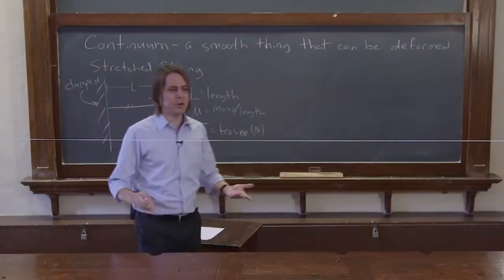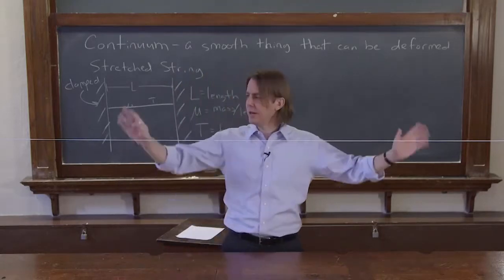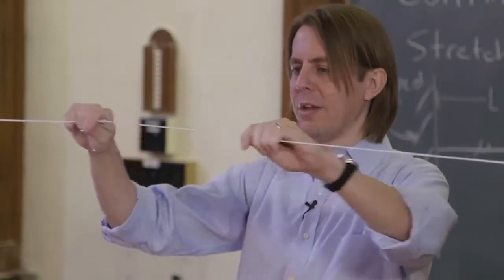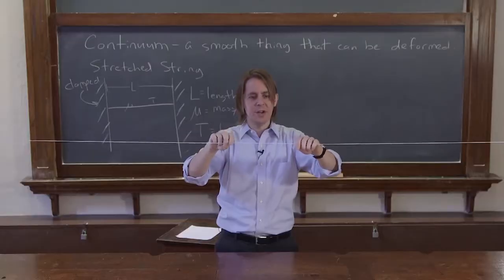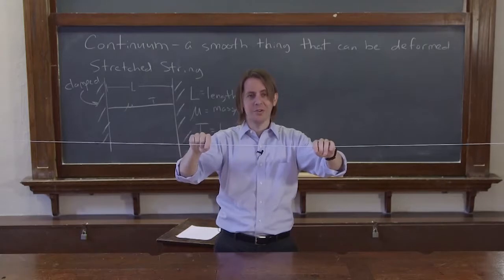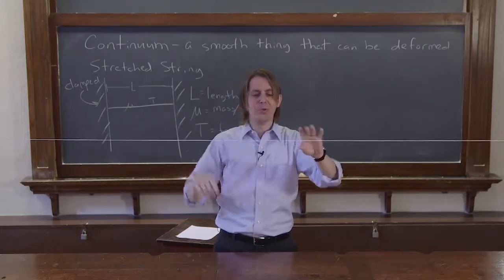So we have a continuum here. So this is a stretched string. It's clamped at both ends. You'll see the ends later. And I can deform it. I can measure. I can feel the tension in it. I know it has a mass density because I measured it. And I know L because I set L. All those are known. And we'll use them in demos later.